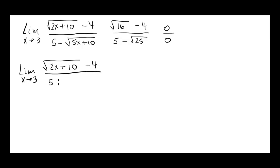The conjugate of the numerator would be square root of 2x plus 10 plus 4, of course we have to divide it by itself so as not to change the problem. So square root of 2x plus 10 plus 4.